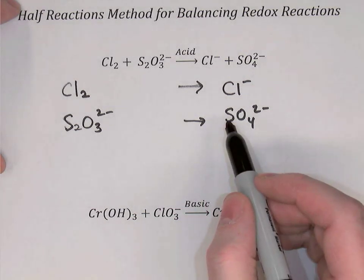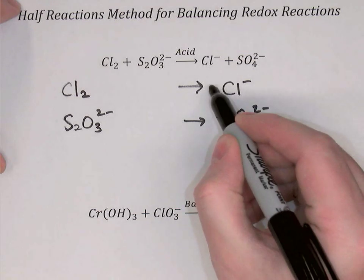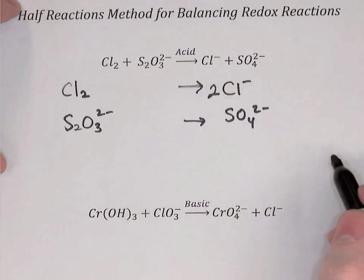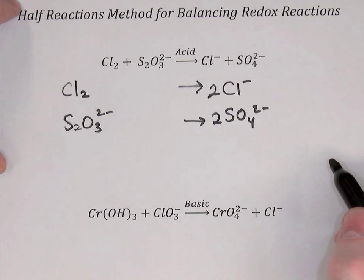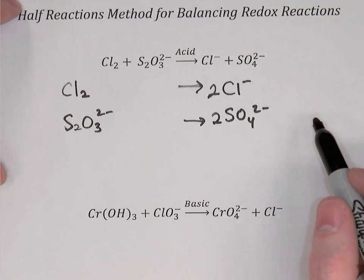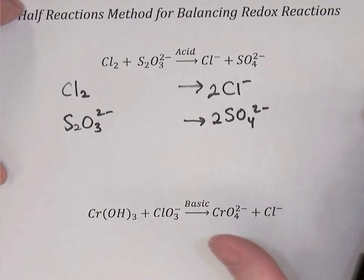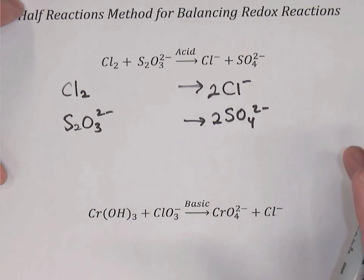First, balance everything other than H and O. We put a 2 in front of Cl⁻ to balance the chlorines, and a 2 in front of SO₄²⁻ to balance the sulfurs. Next, balance oxygens by adding water. The first reaction has no oxygen, so nothing needs to be done to it.